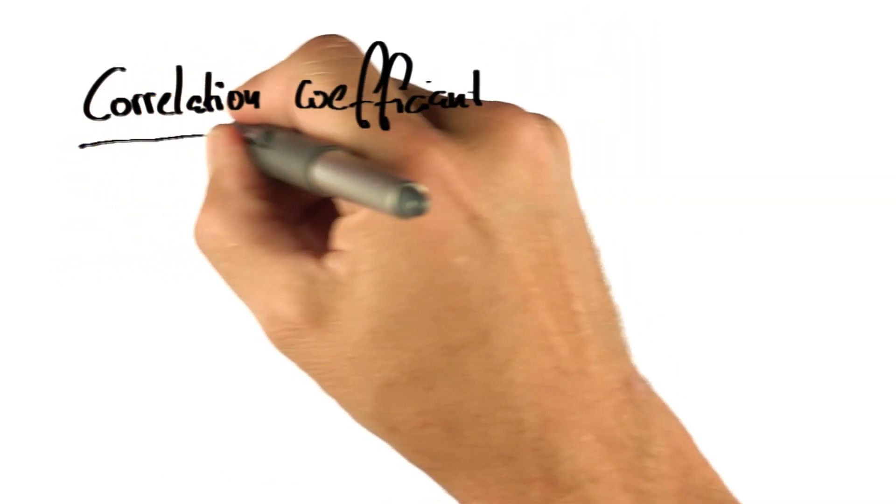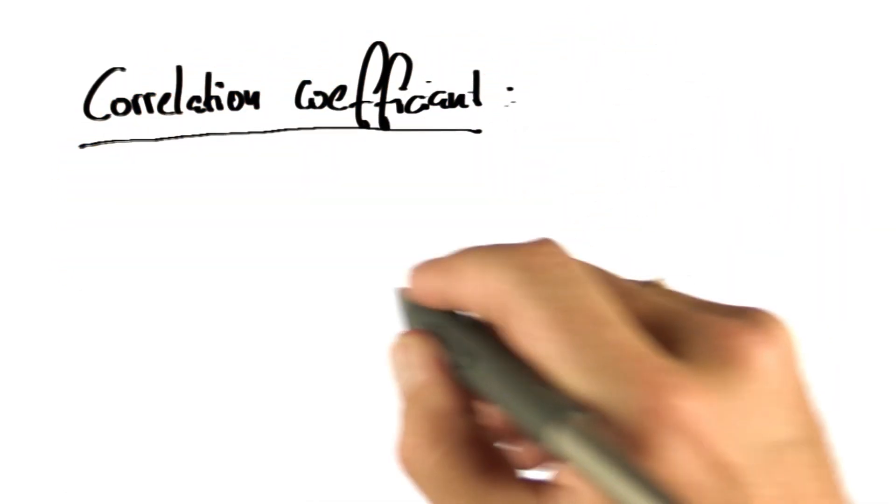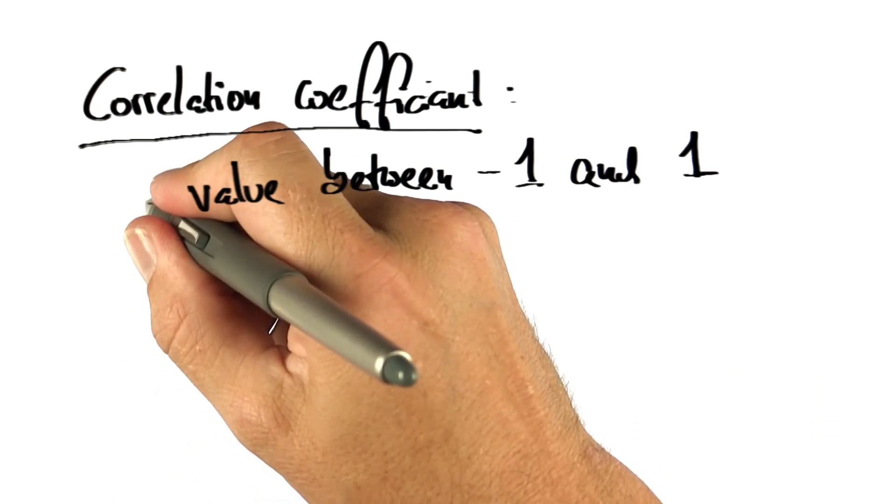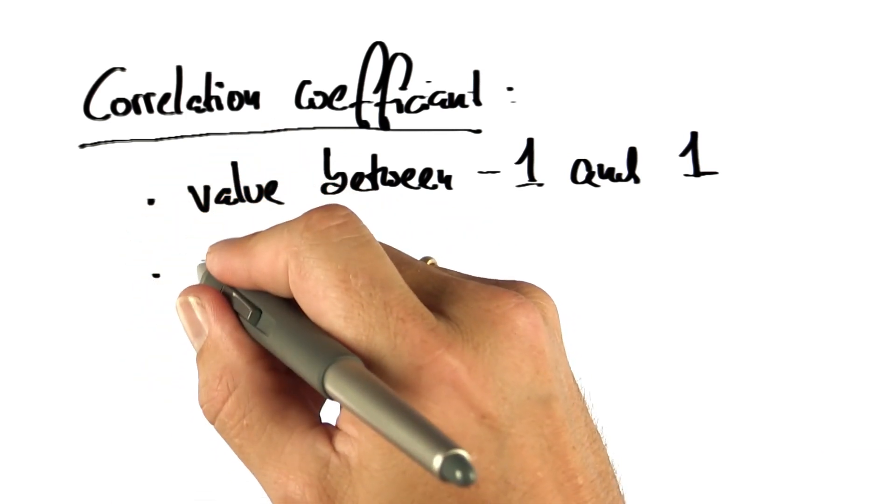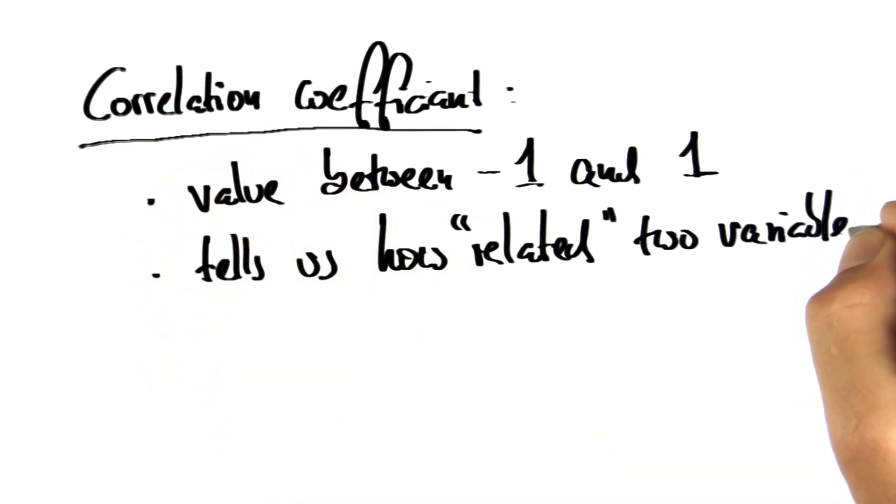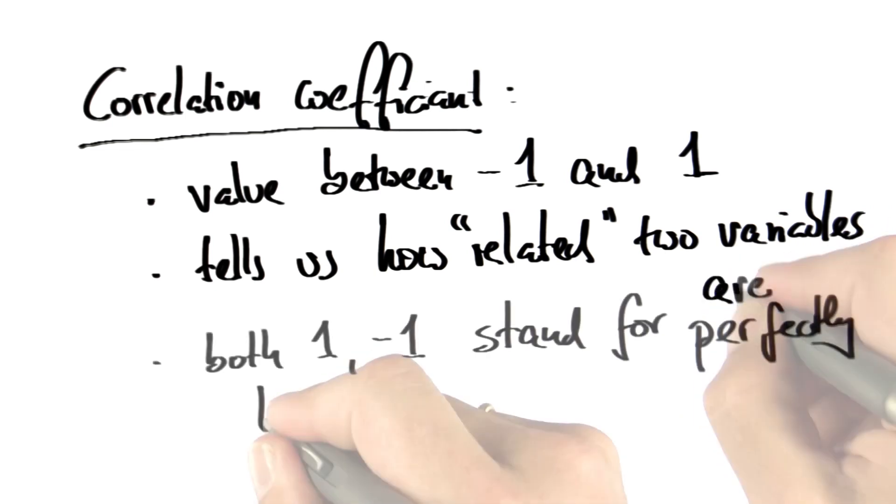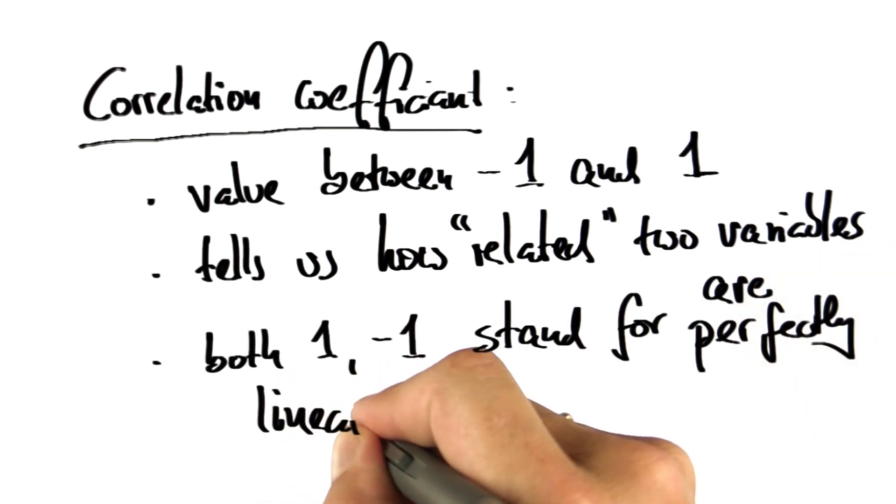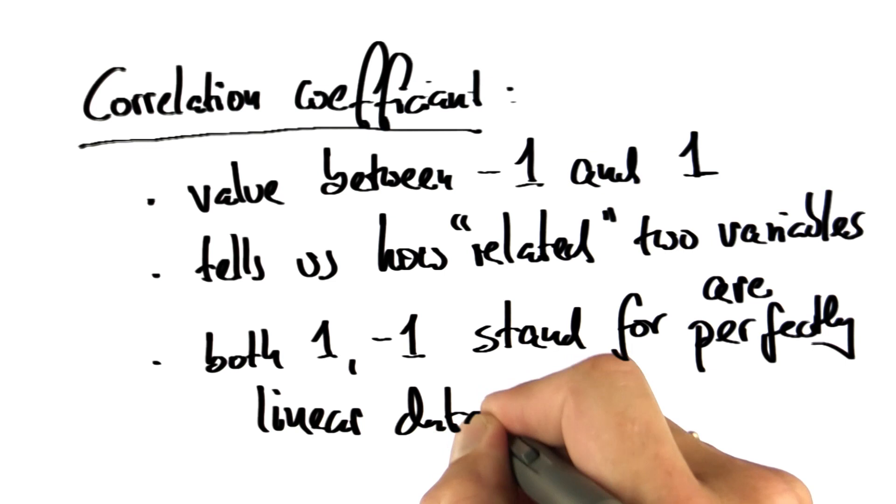So to summarize, the correlation coefficient, which we're just about to learn about, is a value between minus 1 and 1, tells us how related or correlated two variables are, and both 1 and minus 1 stand for perfectly linear data.